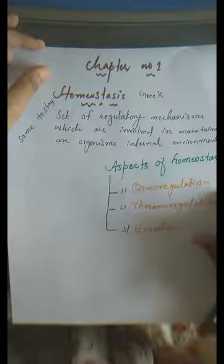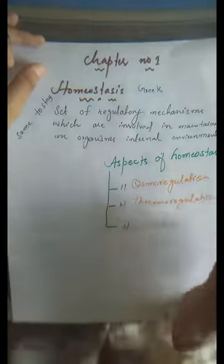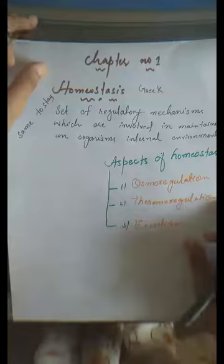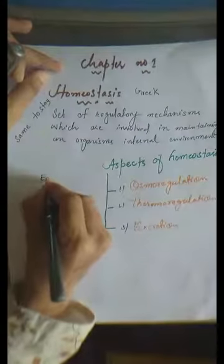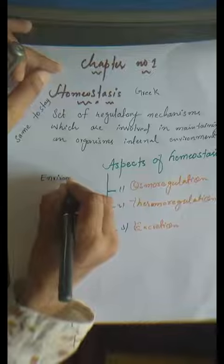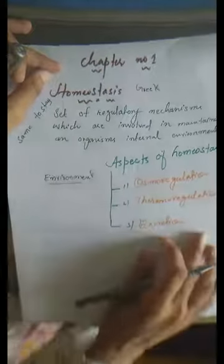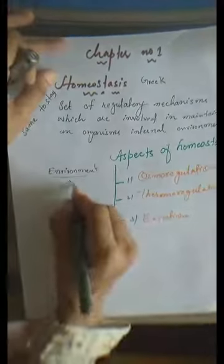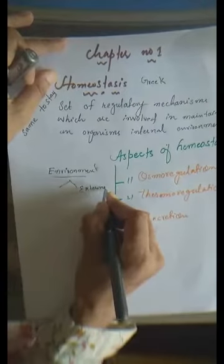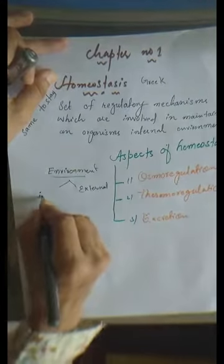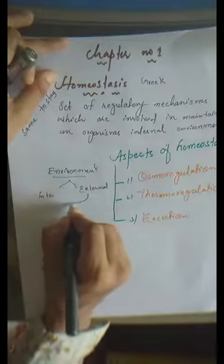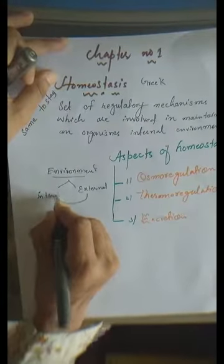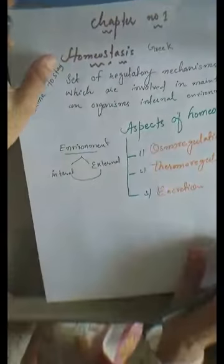Our environment has so many different types. What is environment? Environment is a condition in which an organism lives. There are two types of environment: one is external environment, and the other is internal environment. External environment can affect the internal environment.